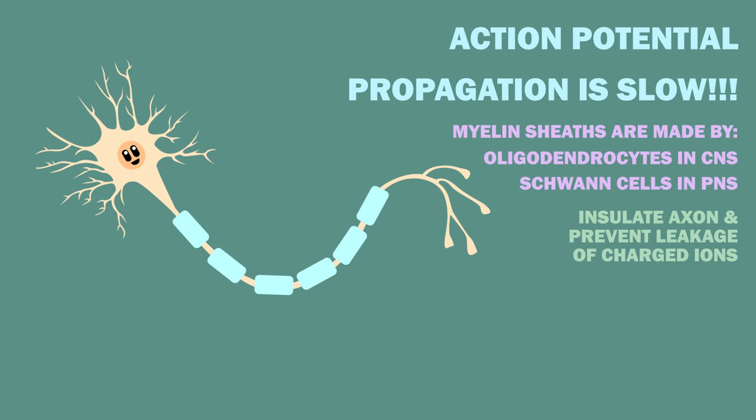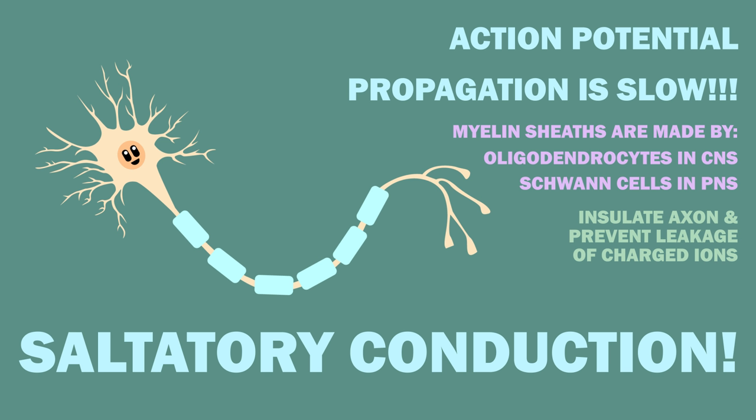Instead, you get what's called saltatory conduction, in which action potentials only occur in the spaces between the myelin, called nodes of Ranvier. In addition to myelin sheaths, neurons with larger diameters also have faster transmission speeds.